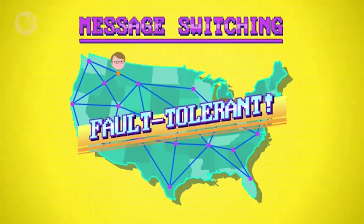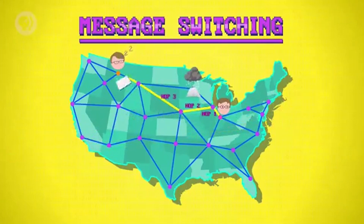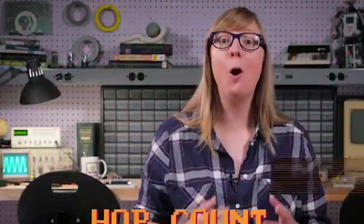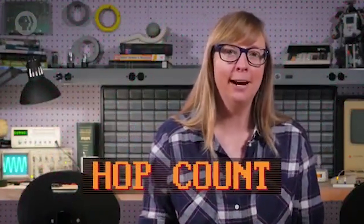Sticking with the mail example, if there's a blizzard in Minneapolis grinding things to a halt, the Chicago mail hub can decide to route the letter through Omaha instead. In this example, cities are acting like network routers. The number of hops a message takes along its route is called the hop count, and keeping track of it is useful because it can help identify routing problems.